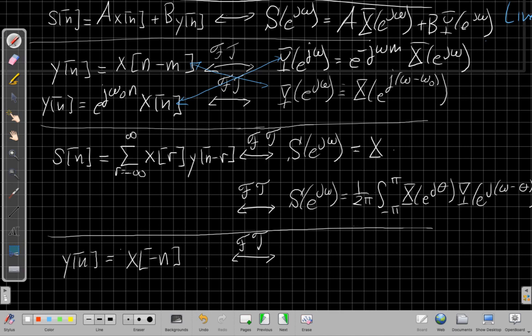So at each omega, I take x at a given omega times y at a given omega, and that gives me the new output Fourier transform, s at a given omega. So if one of these, if I replaced y by h of n, this would be an LTI system.